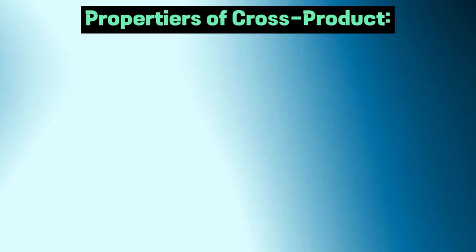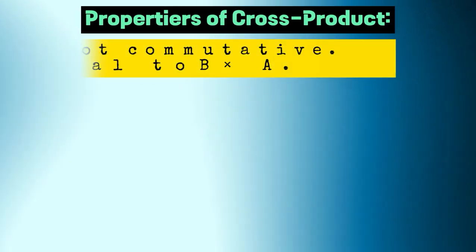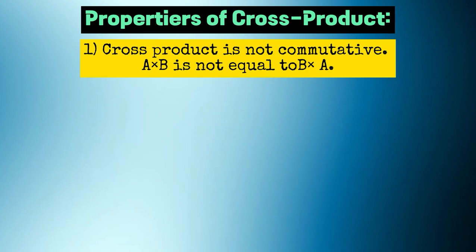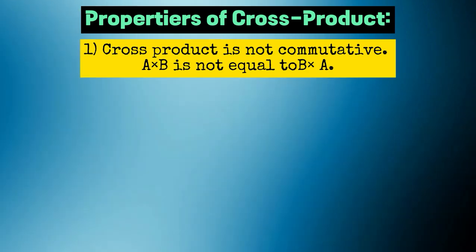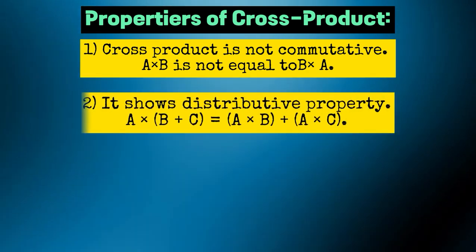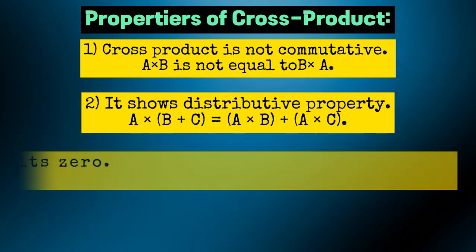Properties of cross product. Property 1: Cross product is not commutative. A cross b is not equal to b cross a. Property 2: It shows distributive property. A cross (B + C) equals (A cross B) plus (A cross C).